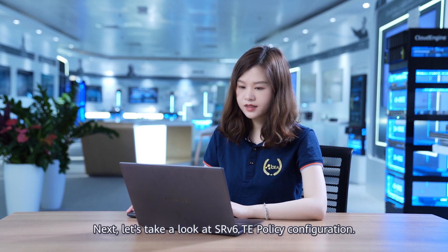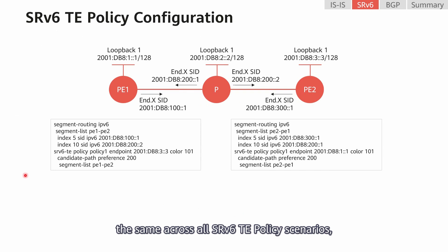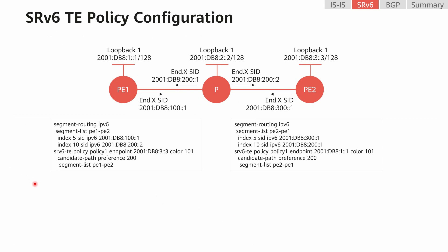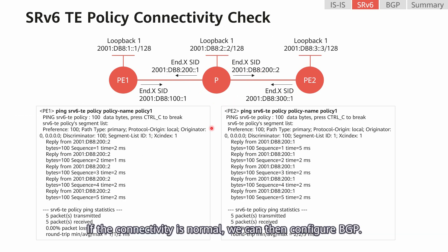Next, let's look at the SRv6 TE policy configuration. Because the configuration methods are practically the same across all SRv6 TE policy scenarios, they will not be described in detail. After configuring IS-IS and SRv6, let's check the SRv6 TE policy connectivity. If the connectivity is normal, we can then configure BGP.